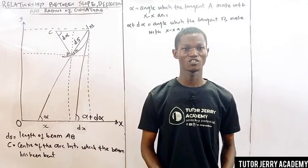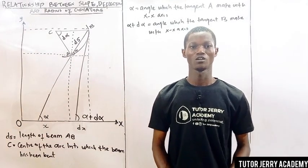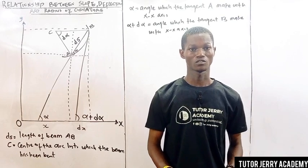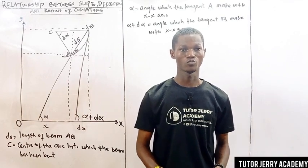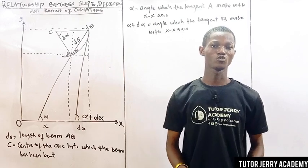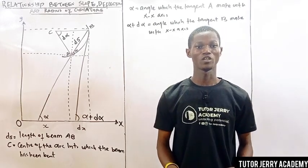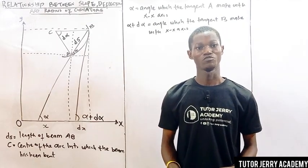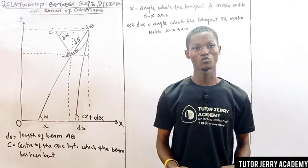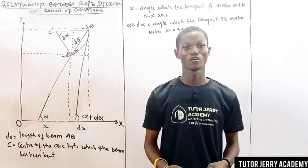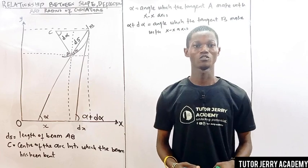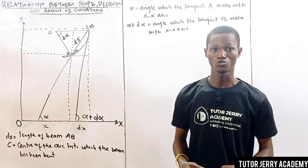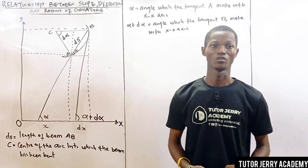Welcome back to today's tutorial. We'll start deflection of beam, and today we'll be looking at the relationship between slope, deflection, and radius of curvature. You'll know that the beginning of most of these proofs leads us from double integration to Macaulay's method and other things that we use in this section.